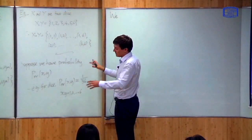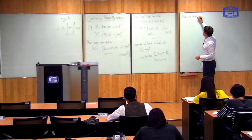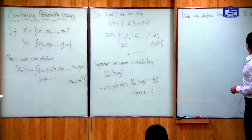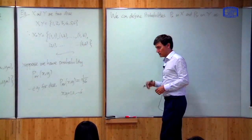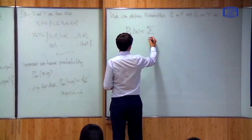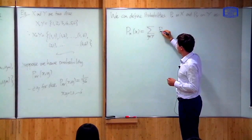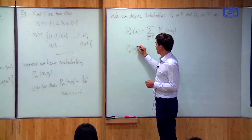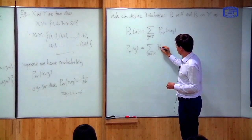If we have this joint probability, then we can define a probability on each of the individual spaces as well. We define P_X on X and P_Y on Y as follows: the probability of event x is the sum over all possible values of y of the joint probability P_{XY}(x, y). Similarly, the probability of event y is the sum over all possible values of x of the joint probability P_{XY}(x, y).